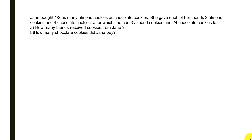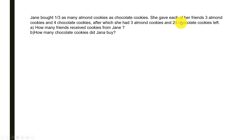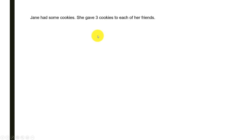Today we are going to look at a problem that might look a bit complex in the beginning. Jane bought one-third as many almond cookies as chocolate cookies. She gave each of her friends three almond cookies and four chocolate cookies, after which she had three almond cookies and 24 chocolate cookies left. The questions are: how many friends received cookies from Jane, and how many chocolate cookies did Jane buy?